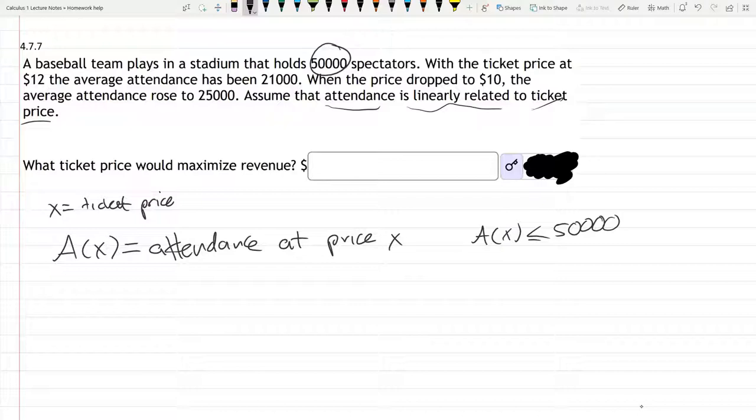They give us two ticket prices and two attendances, so that's two points. I'm going to go ahead and use the slope form here. The slope is attendance 2 minus attendance 1 over X2 minus X1, the two different ticket values.